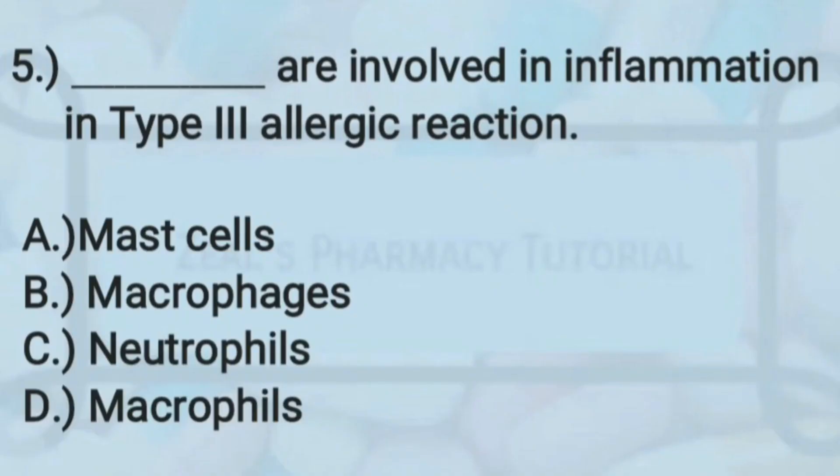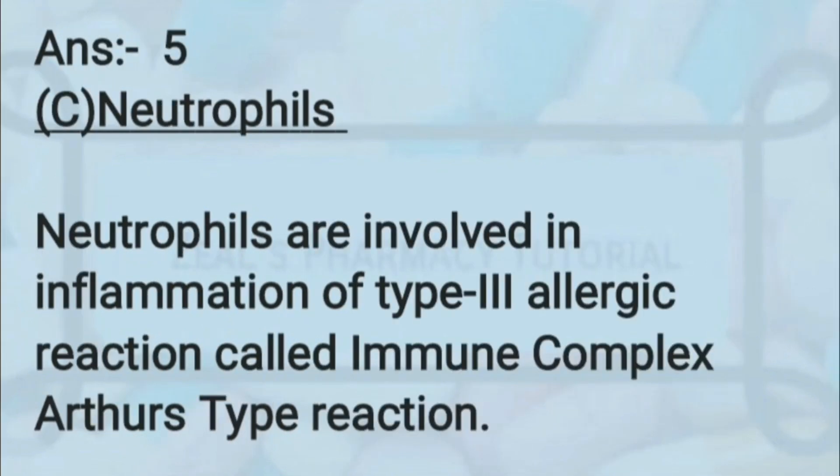Question five: which of the following are involved in inflammation of a type 3 allergic reaction — mast cells, macrophages, neutrophils, or macrophils? The correct answer is neutrophils. Neutrophils are involved in inflammation of the type 3 allergic reaction, also called the immune complex or Arthus-type reaction.